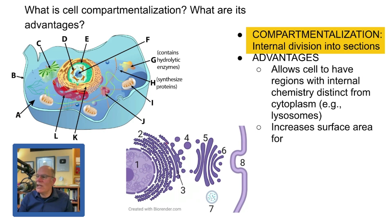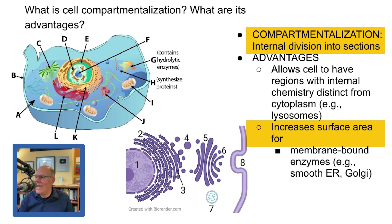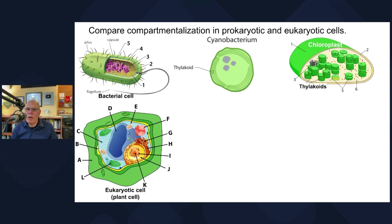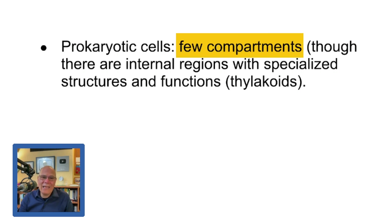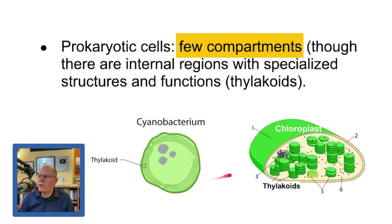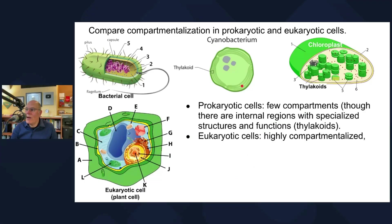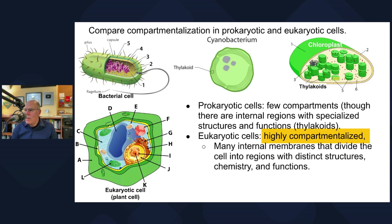Compartmentalization also increases surface area for membrane-bound enzymes — the smooth ER has many enzymes that can only work when embedded in a membrane. In prokaryotic cells there is minimal compartmentalization, though there is some: for example, thylakoids are compartments that enable the light reactions of photosynthesis and are found in both chloroplasts and free-living cyanobacteria. Eukaryotic cells, by contrast, are highly compartmentalized with many internal membranes dividing the cell into regions with distinct structures, chemistry, and function — examples include lysosomes, the endoplasmic reticulum, the Golgi complex, and vacuoles.